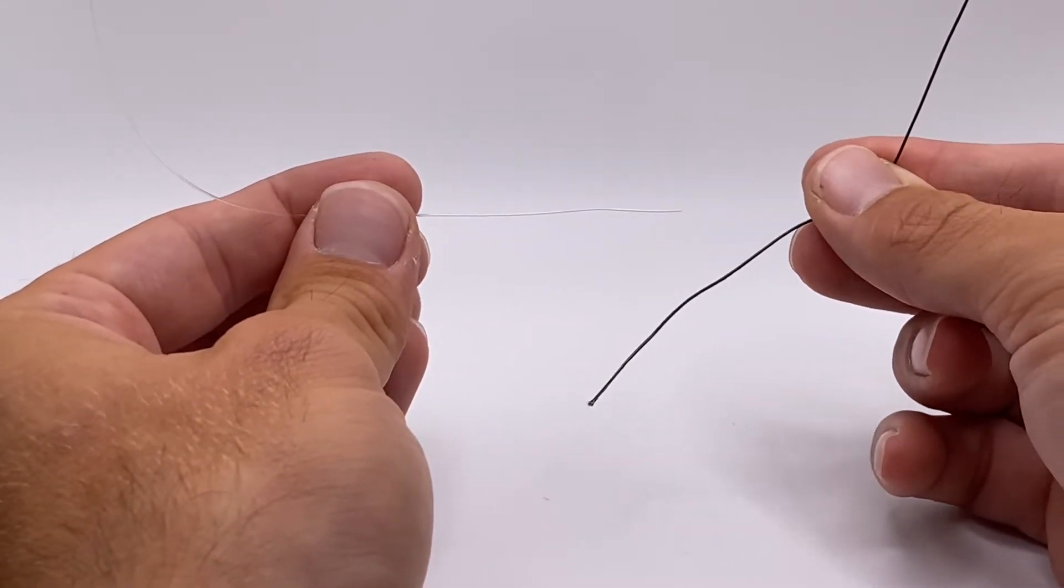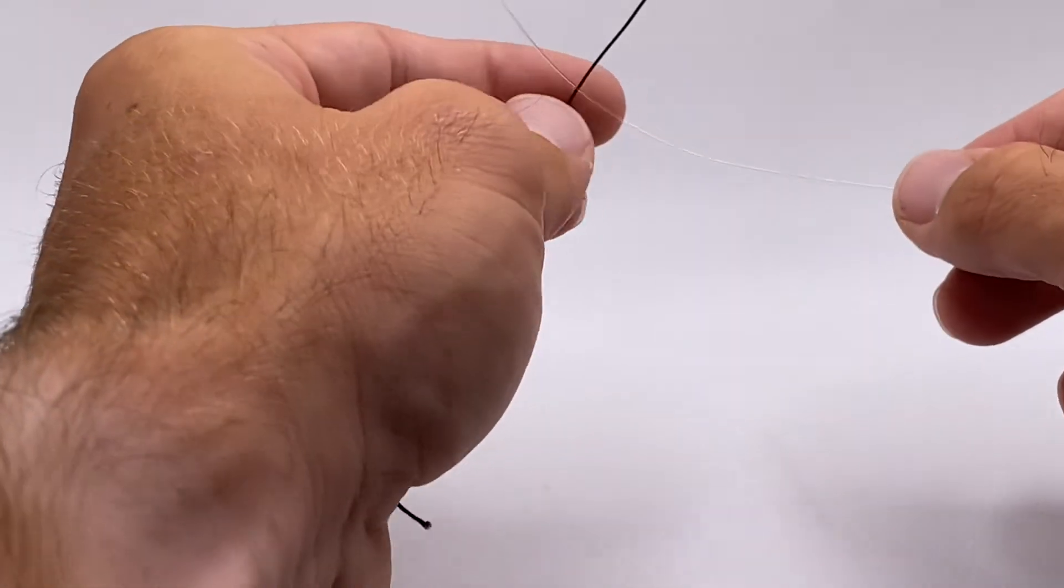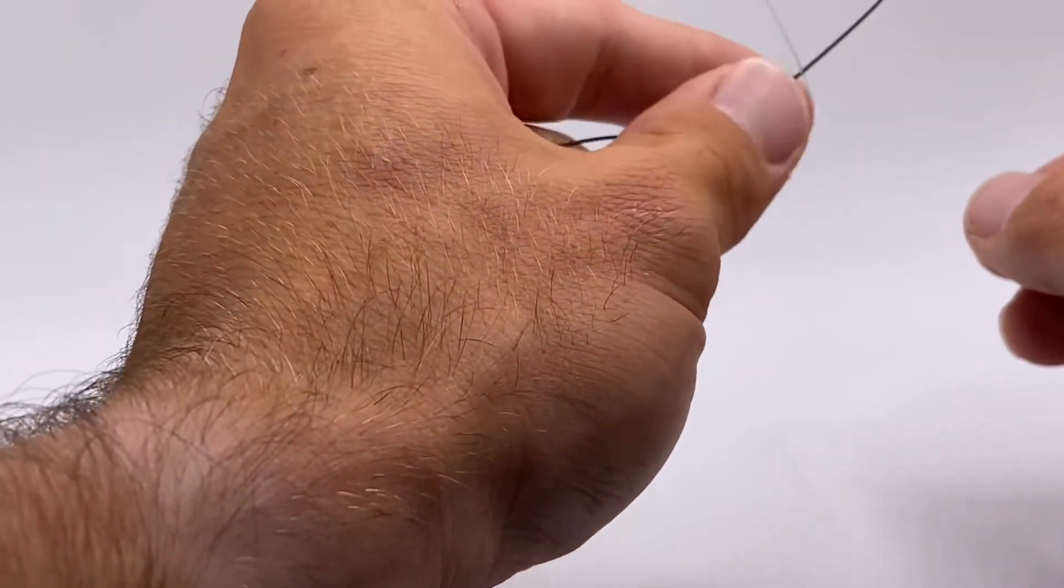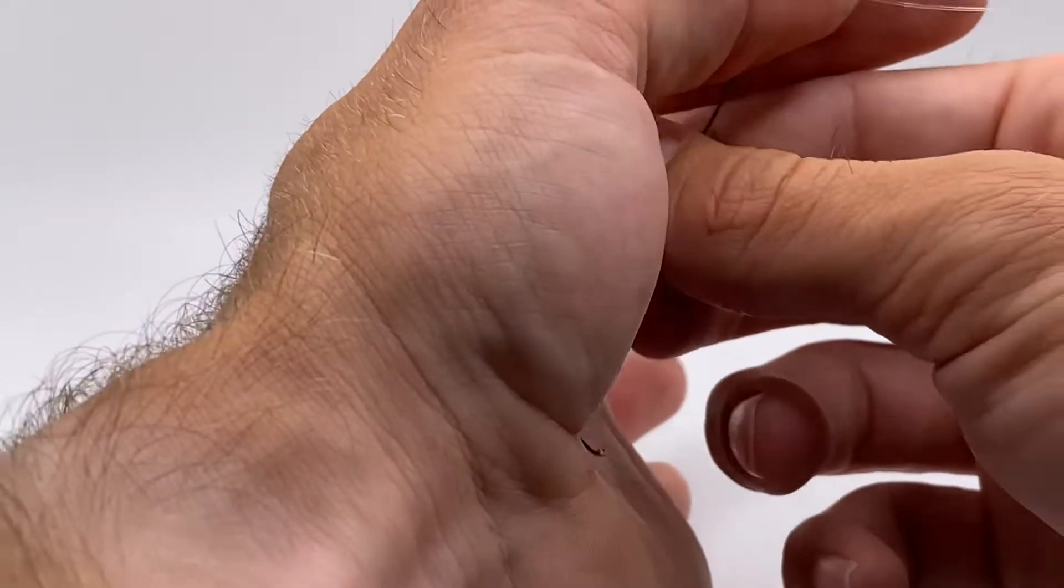So you've got your two lines right here. First things first, you always want to cross the lines just like so. Then you just want to pinch that good spot where you think you've got enough line to work with on each side.